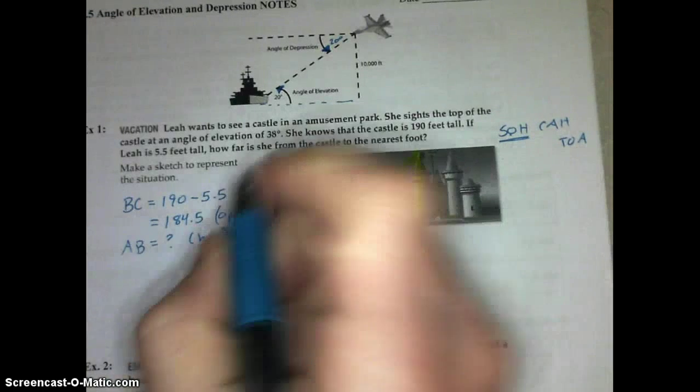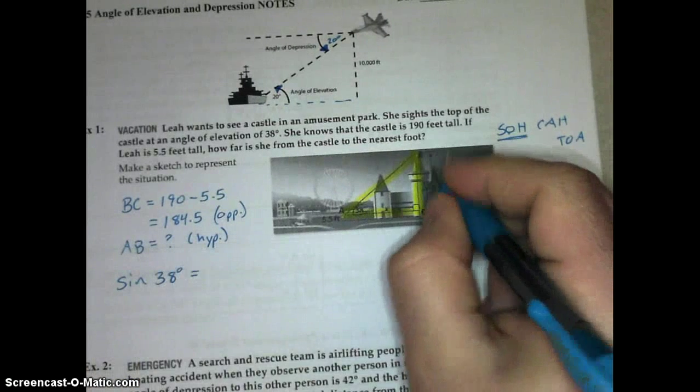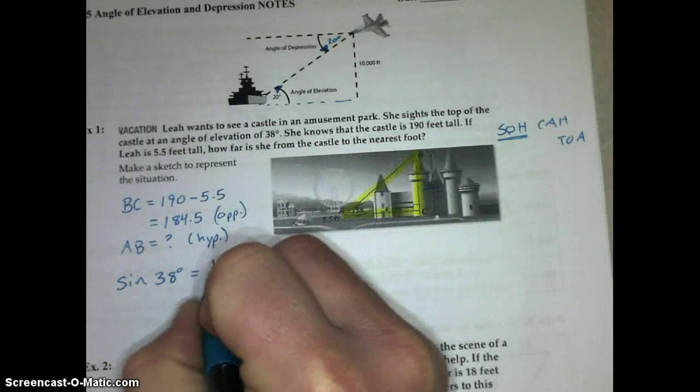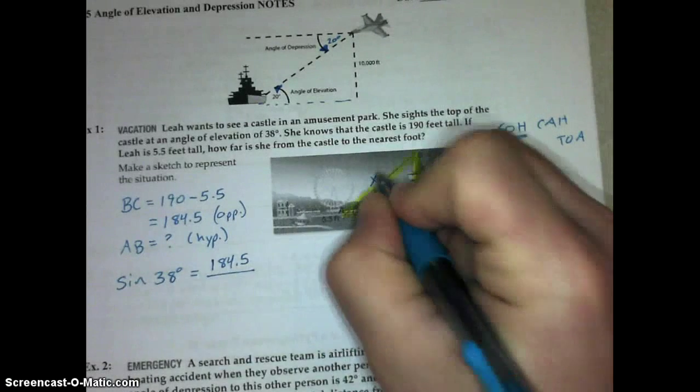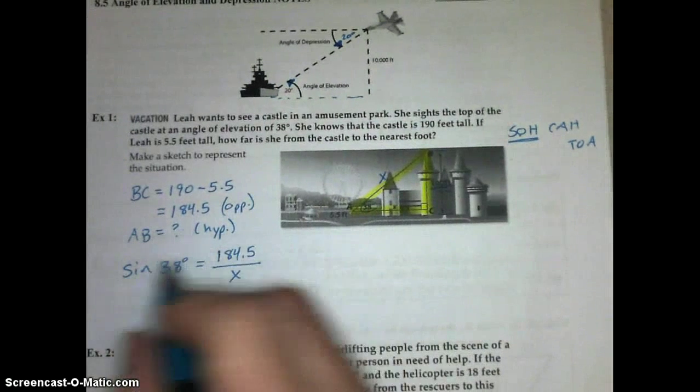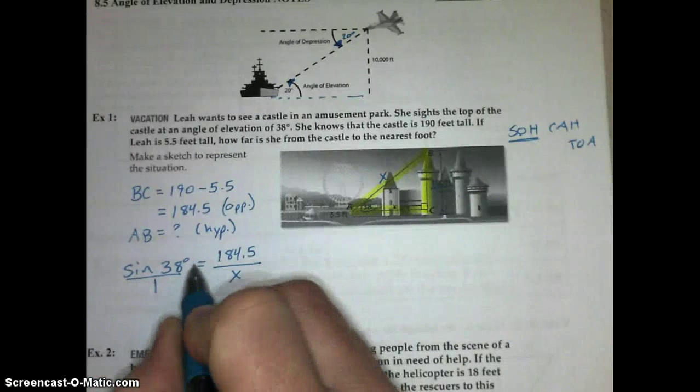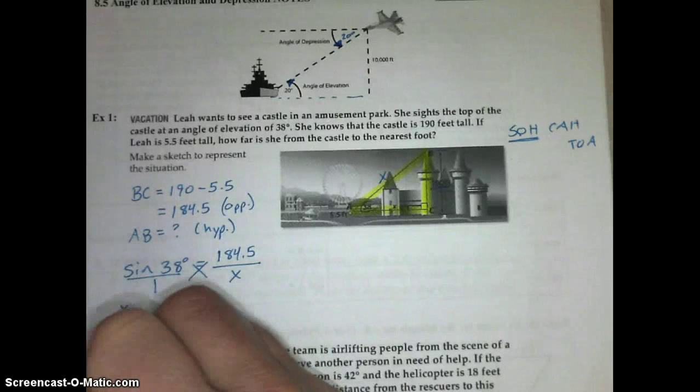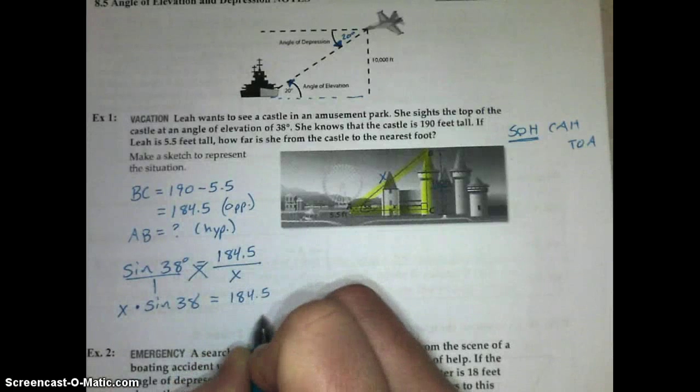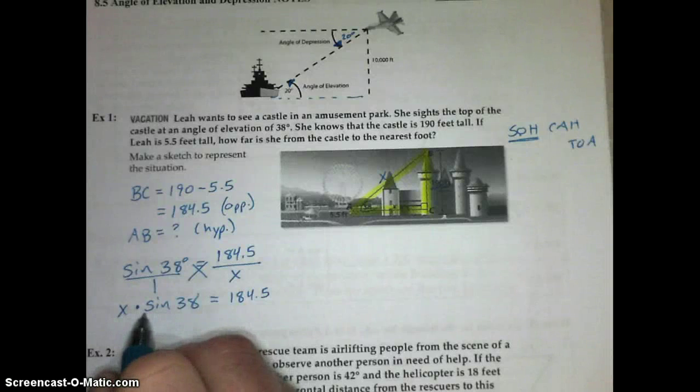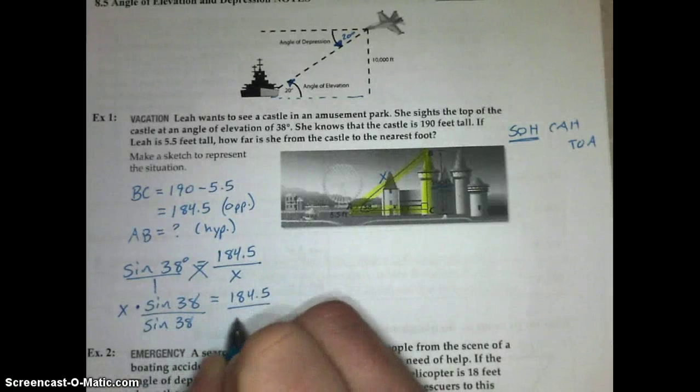We're going to set up this equation. Sine of the 38 degree angle of elevation equals the opposite leg, which is 184.5, over the hypotenuse, which we can call X. Then we need to solve that for X. You should be catching on by now that to solve these equations, we set up a proportion. Put sine of 38 over 1, cross-multiply. We do X times the sine of 38, which equals 1 times 184.5. Then to get X by itself, we have to divide by sine of 38. Remember, sine of 38 is just a value, just a numeric value. We're going to divide both sides by that.